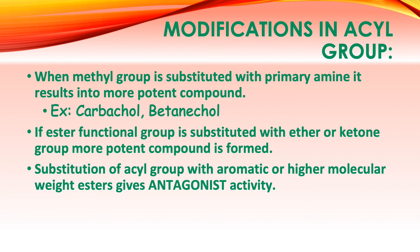Now for the third part of the structure — the acyl group — here are the things to remember to make a drug an indirect acting cholinomimetic. When the methyl group in the acetyl part is substituted with a primary amine (i.e., the methyl group is replaced by a nitrogen-containing group), it results in a more potent compound, such as carbachol and bethanechol.